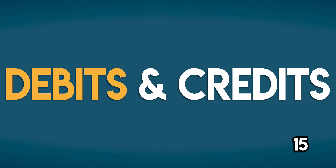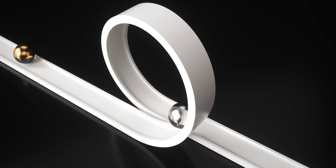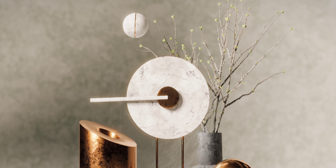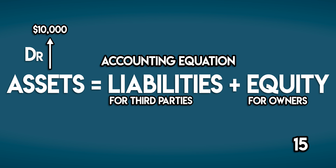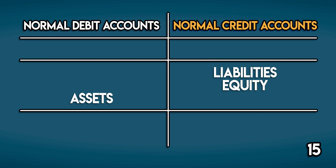Number 15: Debits and Credits. Debits and credits are words used to reflect the double-sided nature of financial transactions. All transactions involve a flow of economic benefit from a source to a destination, meaning there are two sides to every transaction. If we debit one account, we have to credit another. We can separate all accounts into two groups: normal credit accounts and normal debit accounts.